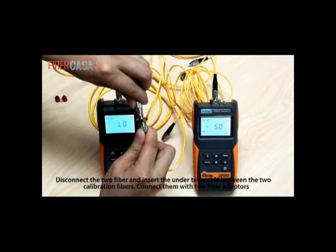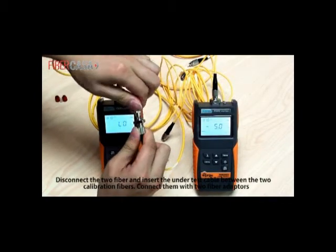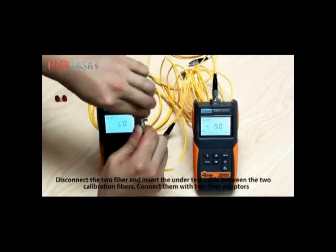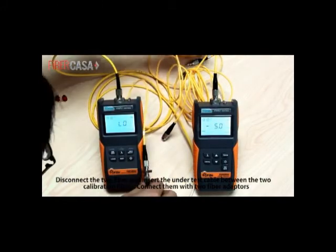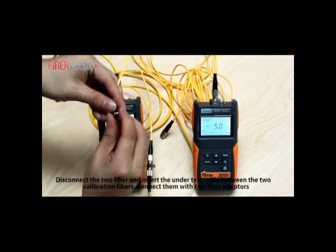Disconnect the two fibers and insert the under test cable between the two calibration fibers. Connect them with two fiber adapters.